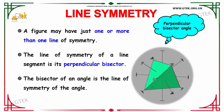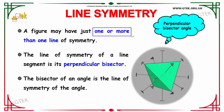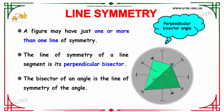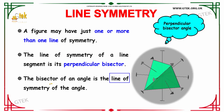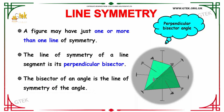A figure can have just one or more than one line of symmetry. The line of symmetry of a line segment will be its perpendicular bisector. And the bisector of an angle will be the line of symmetry of that angle. Here you can see a number of perpendicular bisectors which bisect the angle of symmetry.